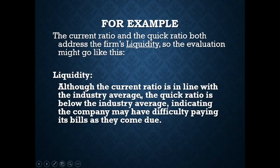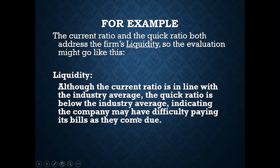What makes this a good response: first, we identify the ratios — current and quick — that speak to the firm's liquidity. Then we identify what the quick analysis revealed: the current ratio was neutral, the quick ratio was poor. We conclude with an evaluation answering the core liquidity question — can the firm pay its bills on time? We say they could have difficulty. We can't say they will, because we can't know the future, but based on our analysis, the concern is real.